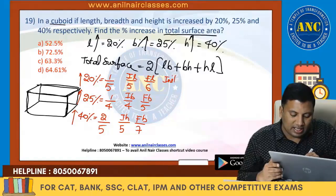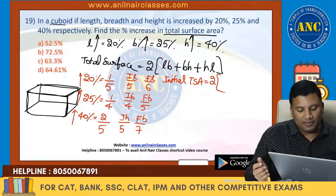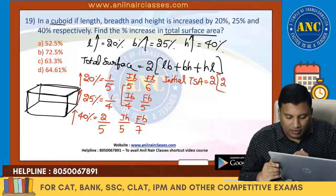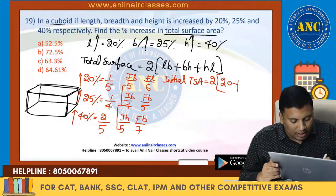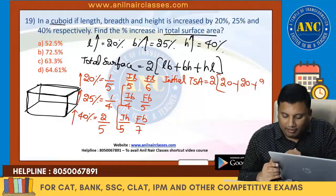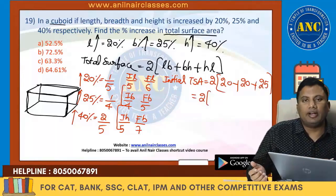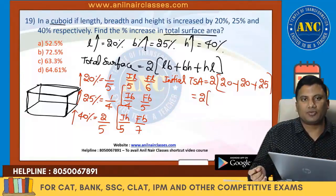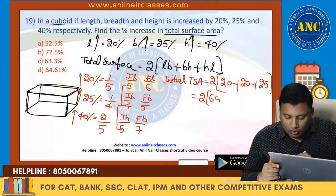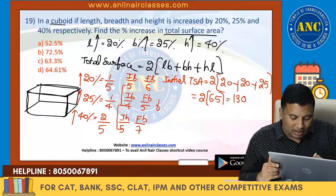Initial total surface area — it's just a substitution. L into B: 5 × 4 = 20. B into H: 4 × 5 = 20. H into L: 5 × 5 = 25. So 2 into (20 + 20 + 25) = 2 into 65 = 130. Initial total surface area is 130.